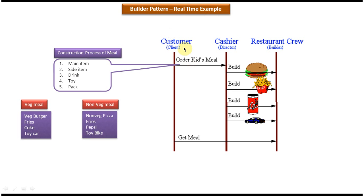You can see a customer here, a cashier, and a restaurant crew. The customer is nothing but a client, the cashier is the director, and the restaurant crew is the builder.